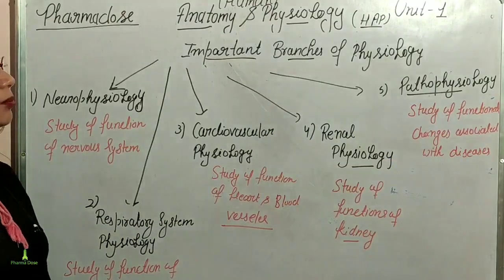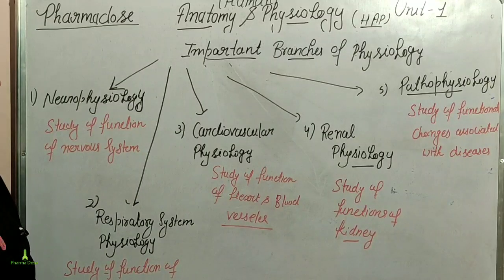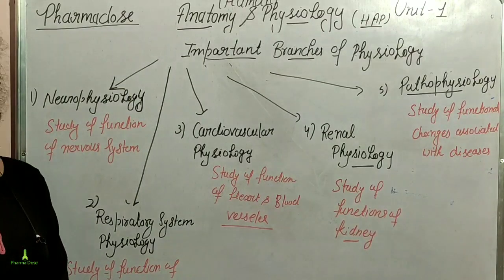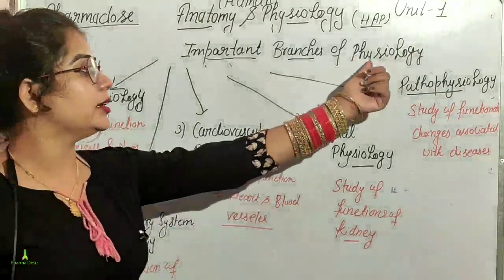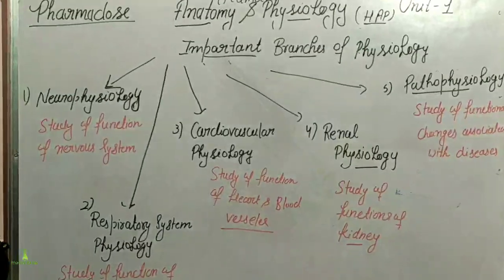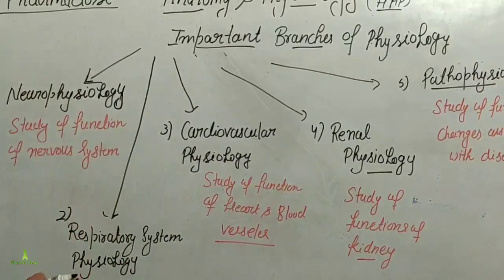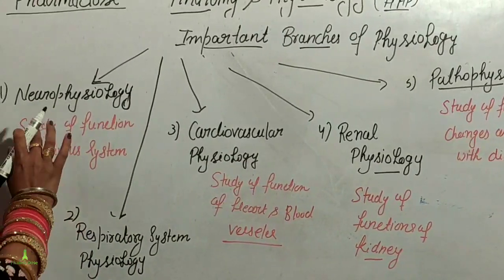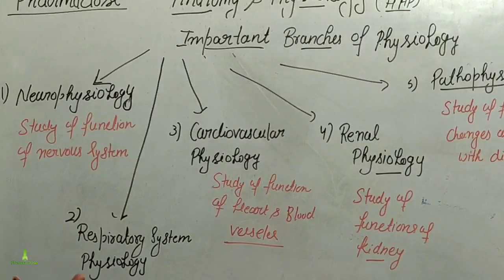Next we discuss the branches of physiology. We have covered anatomy branches; now we will discuss the physiology branches, which deal with body functions. Neurophysiology means the study of the function of the nervous system — the brain, spinal cord, nervous system, and neurons.